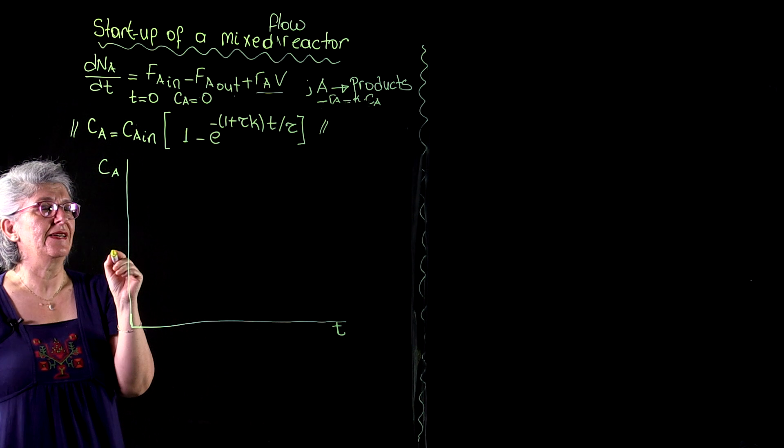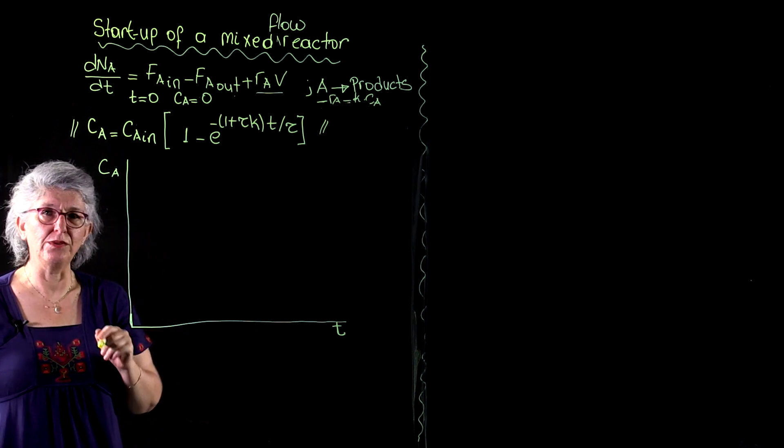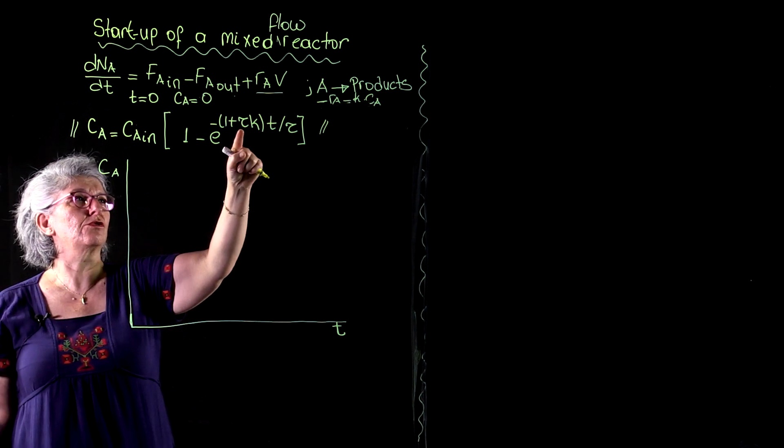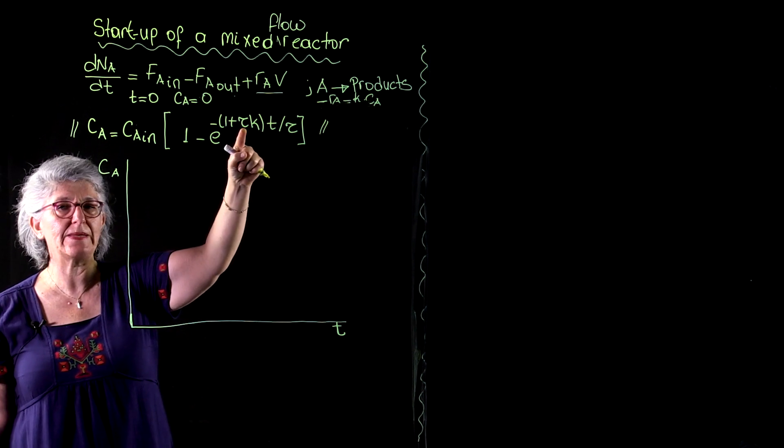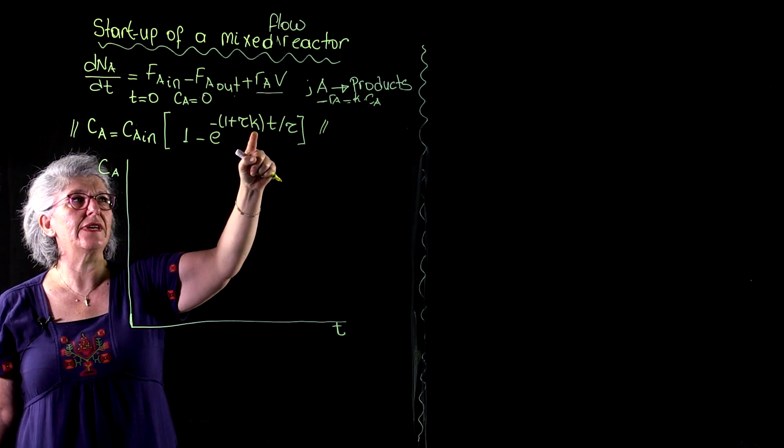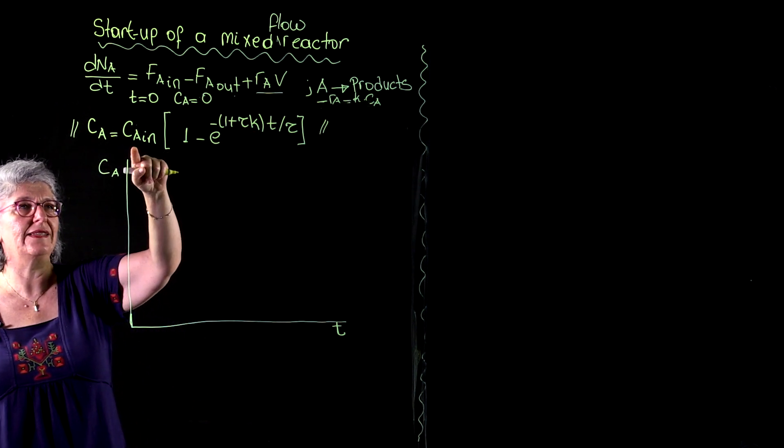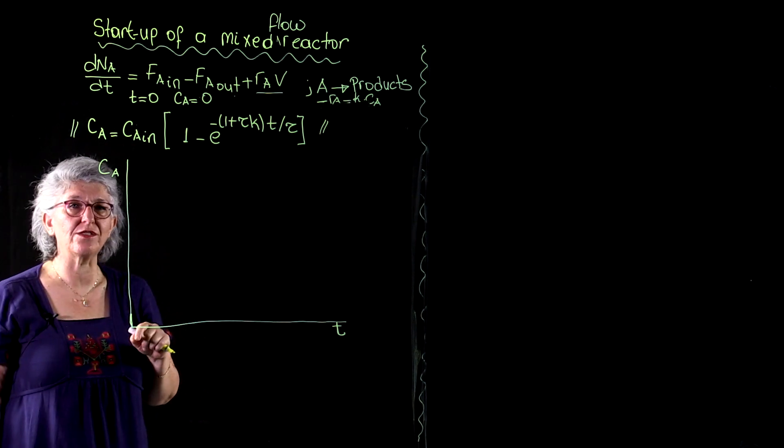My recommendation is for you to set different values to Tau, Tau was the spacetime, K, K was the rate constant, and CA in, the inlet concentration, and generate your own curves.